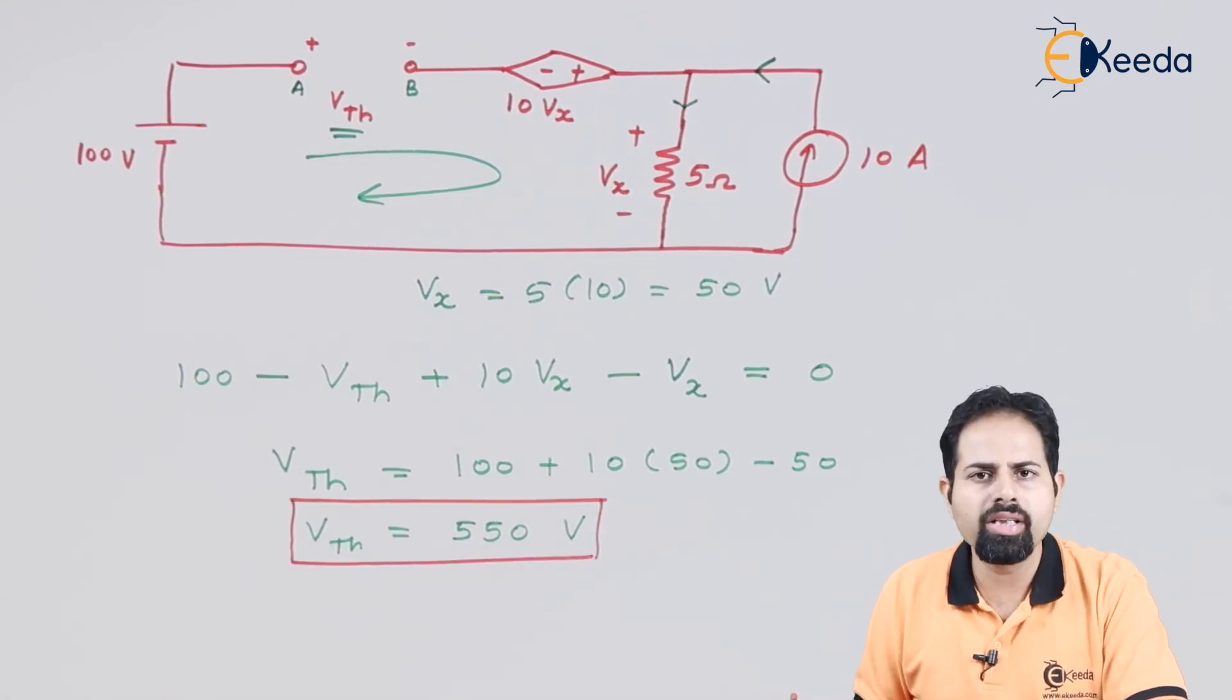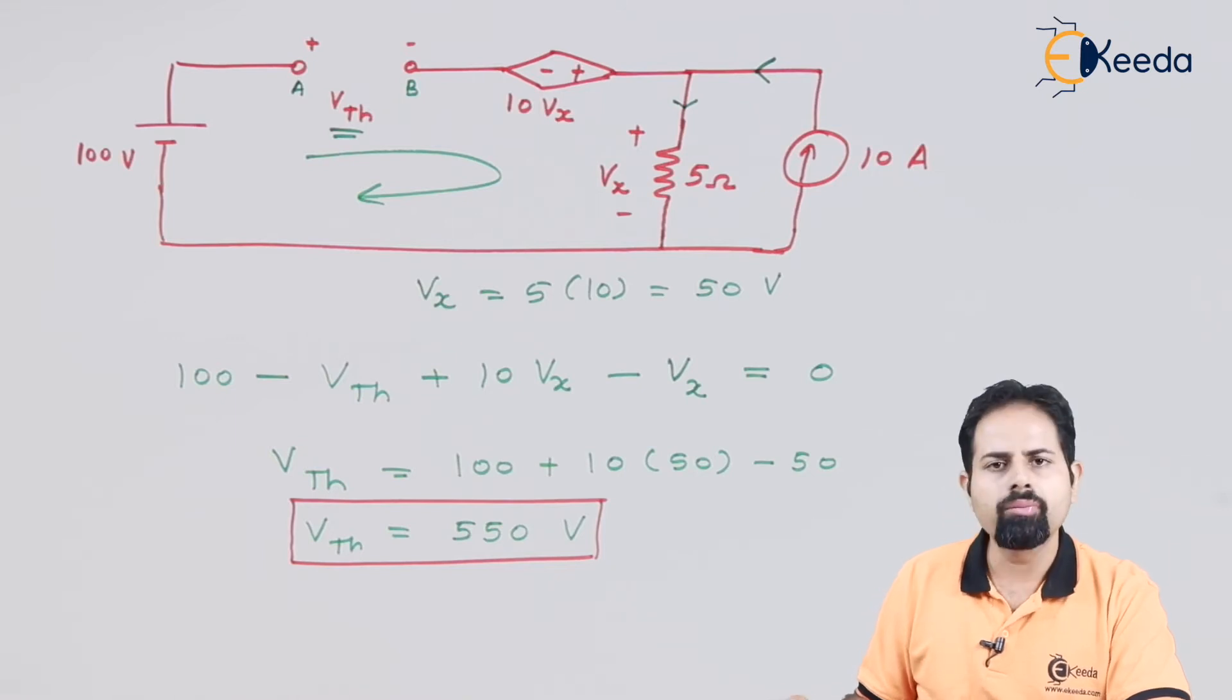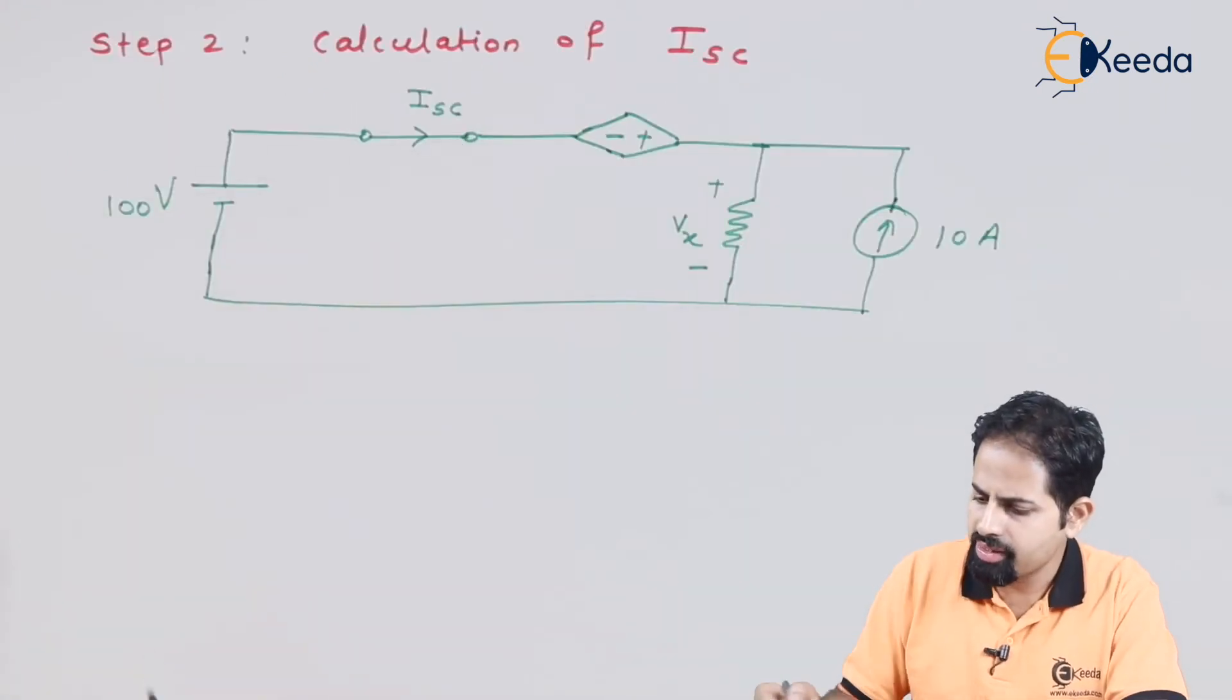So step number one is done. By calculation, we got Vth equal to 550 volts. Now step number two is, we will short this branch A and B and we will calculate short circuited current. So to calculate this ISC, what we will do? First, we will apply mesh here or we will apply KVL here.